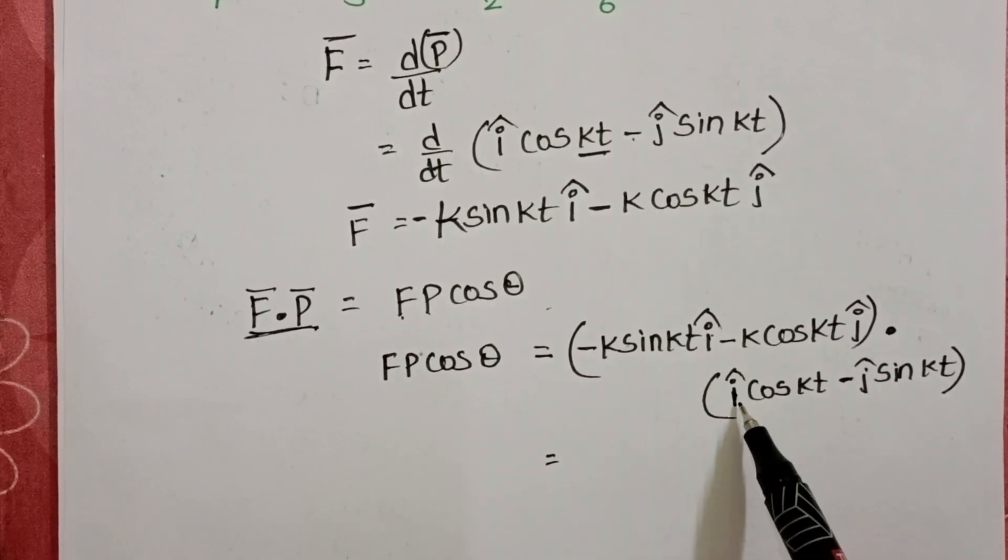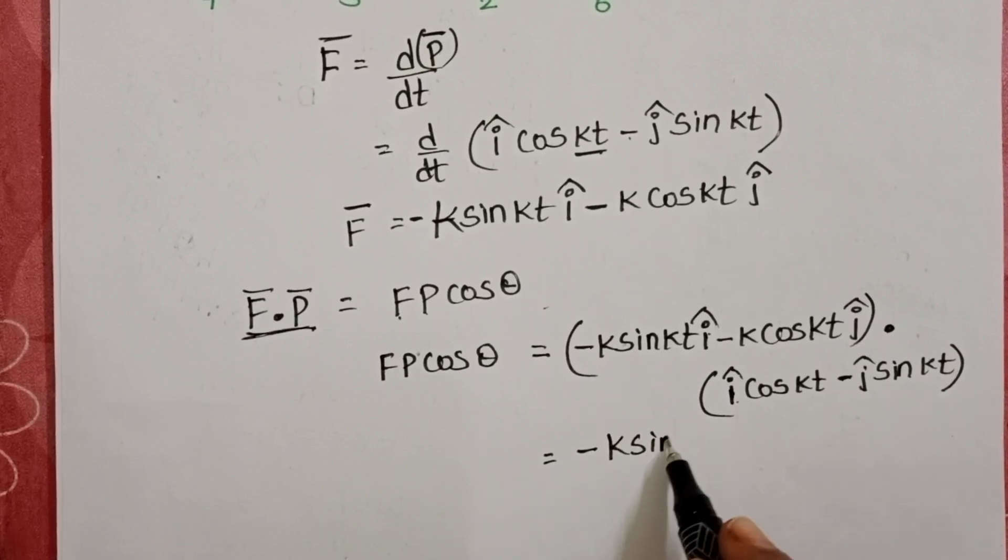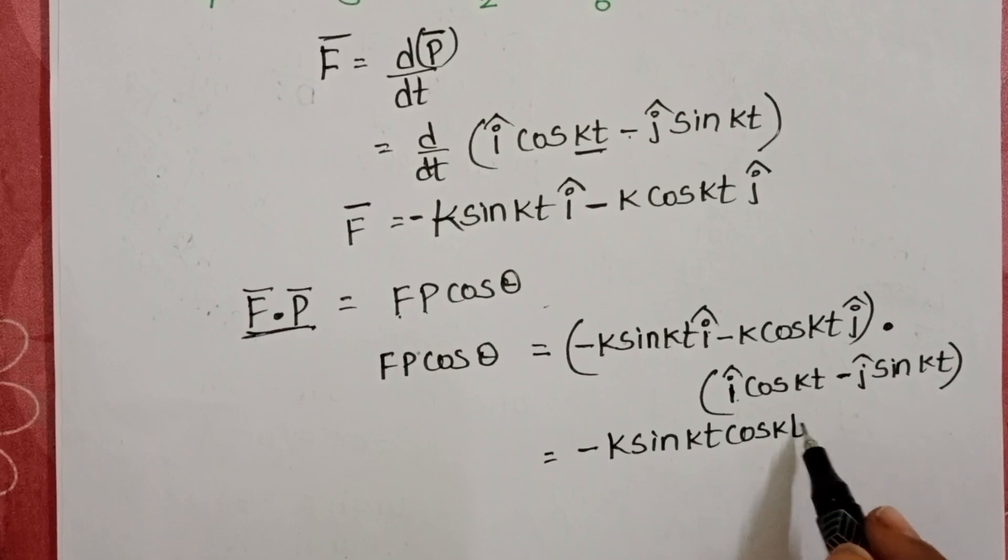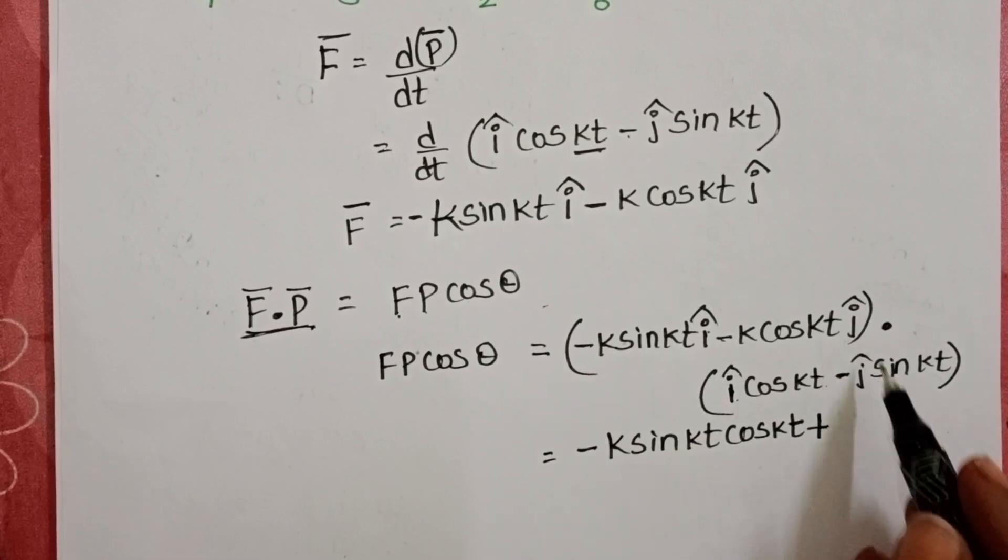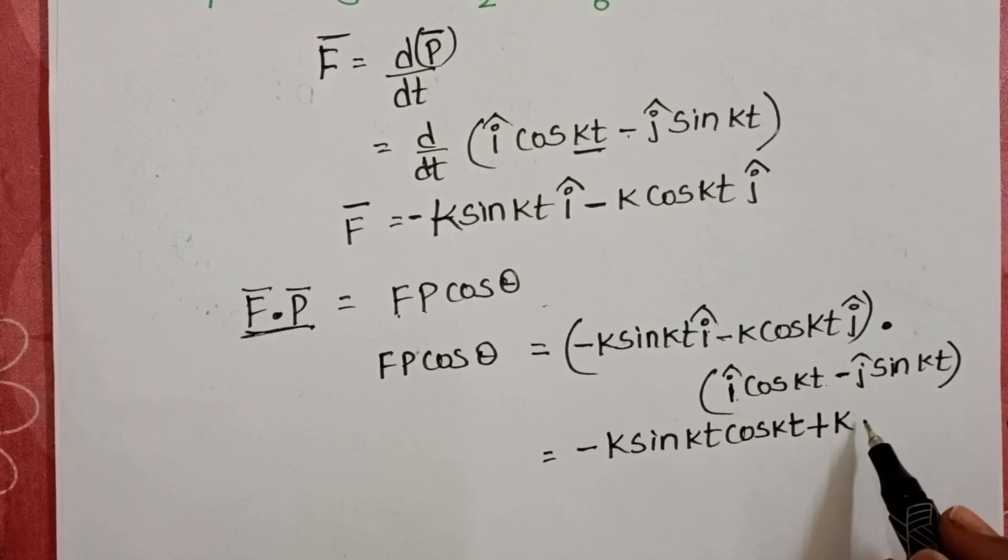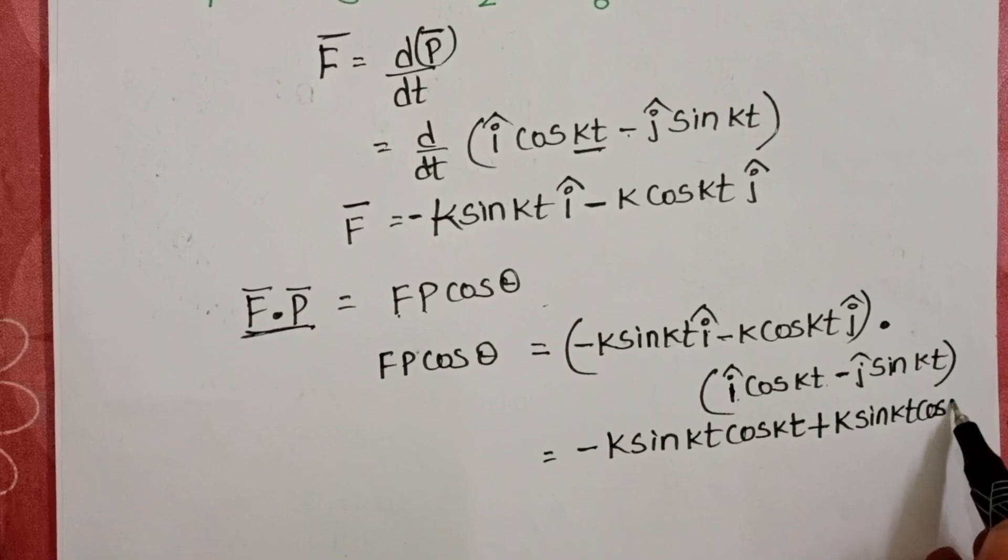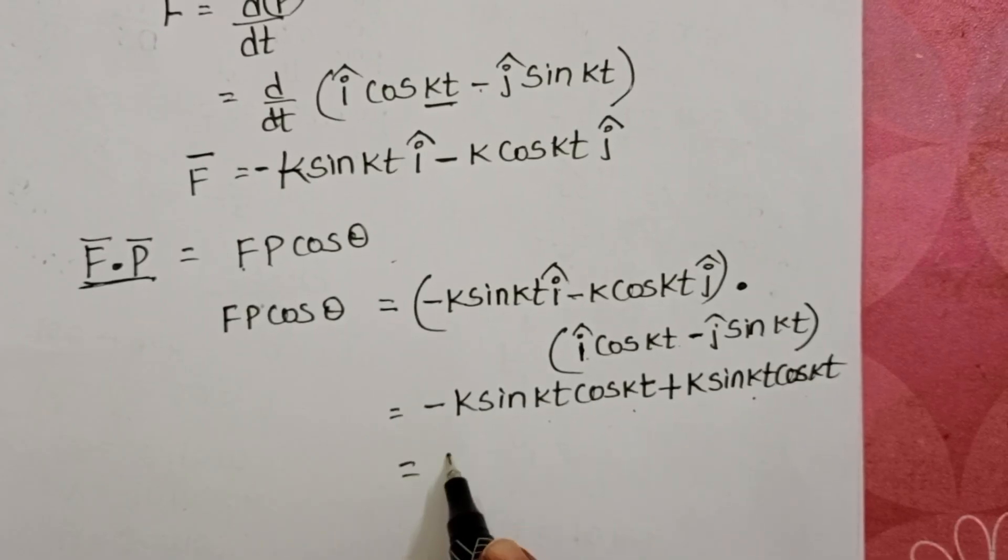I cap dot I cap equals 1. It becomes minus K sin KT cos KT. Minus into minus becomes plus. J cap dot J cap equals 1. Then, this term K sin KT cos KT. These two terms get cancelled. It becomes 0.